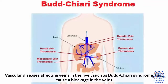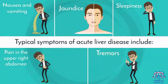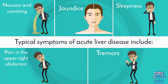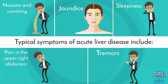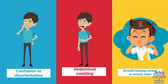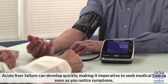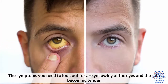Symptoms: Typical symptoms of acute liver disease include: 1. Nausea and vomiting. 2. Yellowing of the skin caused by jaundice. 3. Sleepiness. 4. Pain in the upper right abdomen. 5. Tremors. 6. Malaise — a sense of being unwell. 7. Confusion or disorientation. 8. Abdominal swelling. 9. Breath having a sweet or musty odor. Acute liver failure can develop quickly, making it imperative to seek medical help as soon as you notice symptoms. Key symptoms to watch for are yellowing of the eyes and skin becoming tender.